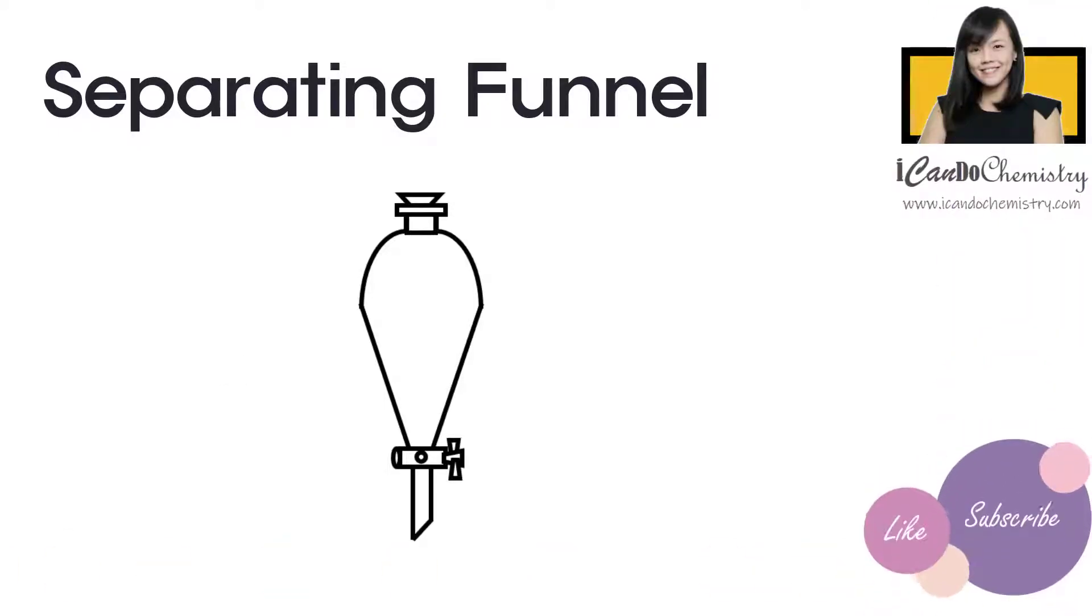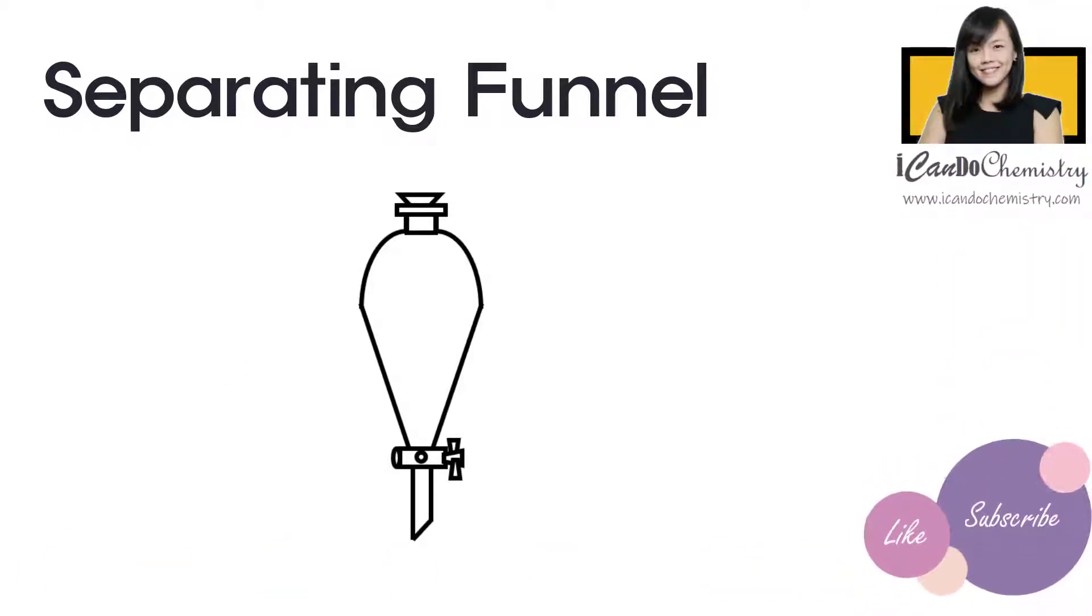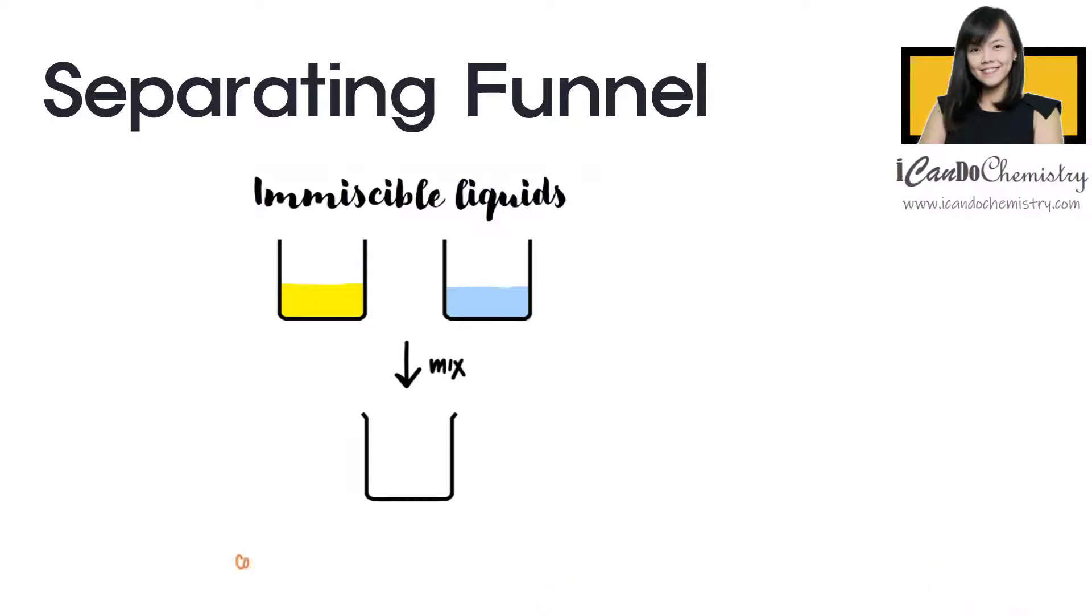We use a separating funnel to separate immiscible liquids. One very common example of immiscible liquids is the mixture of oil and water. When we allow the mixture to rest after mixing, the mixture eventually separates into distinct layers of liquids.